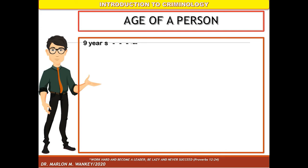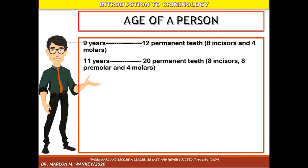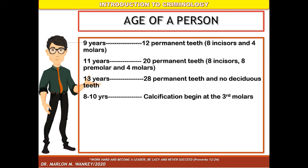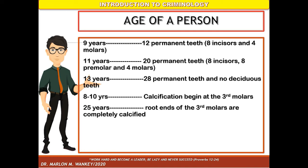A person is approximately 9 years old when they have 12 permanent teeth — 8 incisors and 4 molars. An 11-year-old has 20 permanent teeth: 8 incisors, 8 premolars, and 4 molars. A 13-year-old has 28 permanent teeth and no deciduous teeth. Between 8 to 10 years old, calcification begins at the third molars, and at 25 years old the root ends of the third molars are completely calcified.